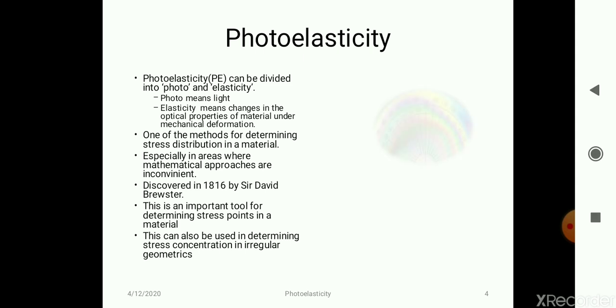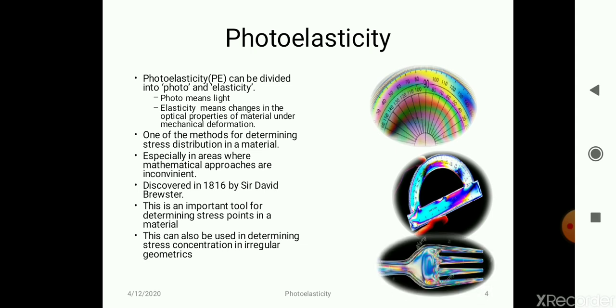Photoelasticity - photo means light and elasticity refers to changes in the optical properties of a given component because of mechanical deformation. It is one of the methods used for determining stress distribution in irregular surfaces where we cannot use mathematical approaches. This concept came into picture in 1816 by Sir David Brewster.